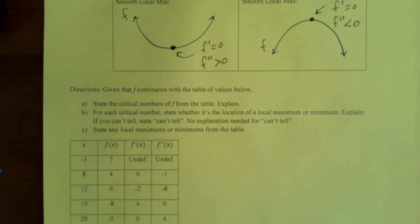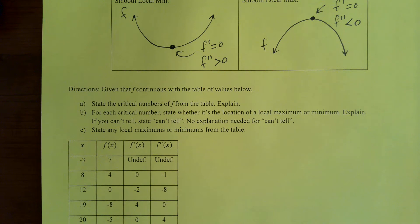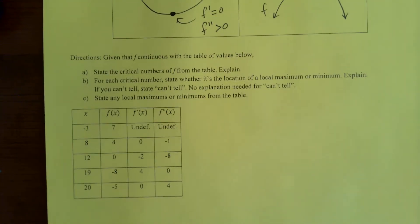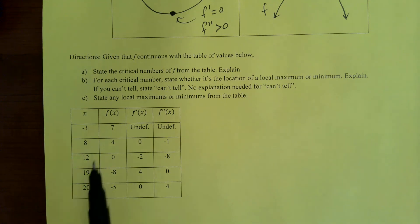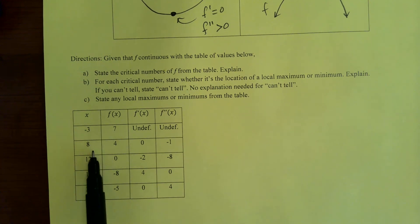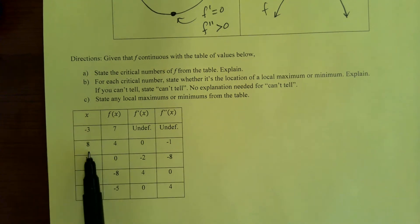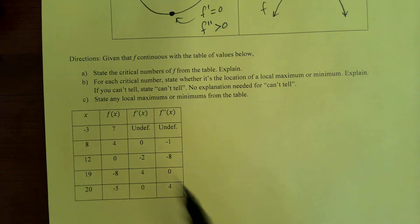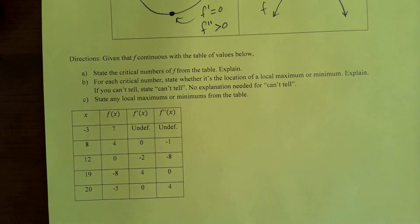Here are the directions: given that F is continuous with the table of values below. The fact that F is continuous means there are no gaps — it's a continuous curve, so you'd connect all these points. For X equals 5, there would be an output; for X equals 8.00001, there would be an output. So them telling you it's continuous means there's more going on than the table is showing you. Part A: state the critical numbers of F from the table and explain.